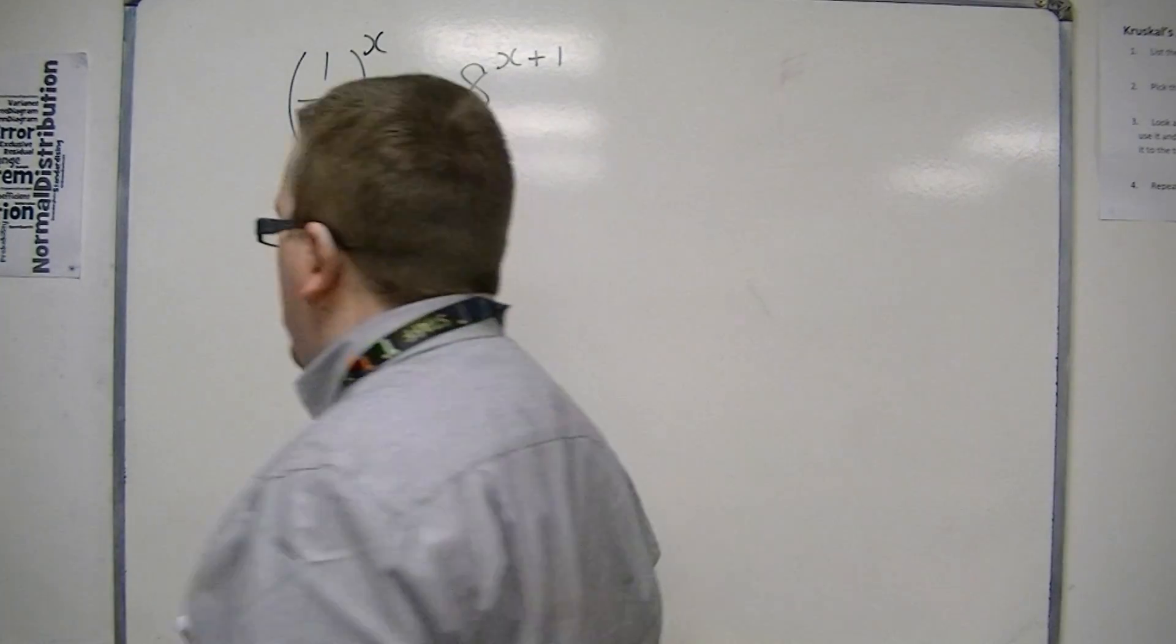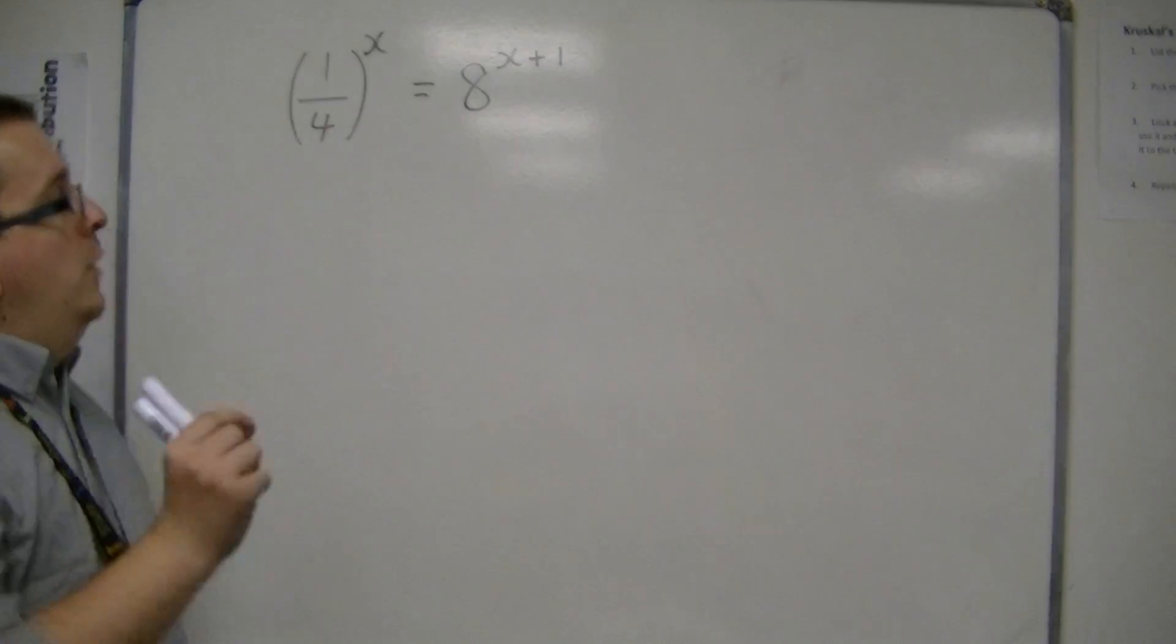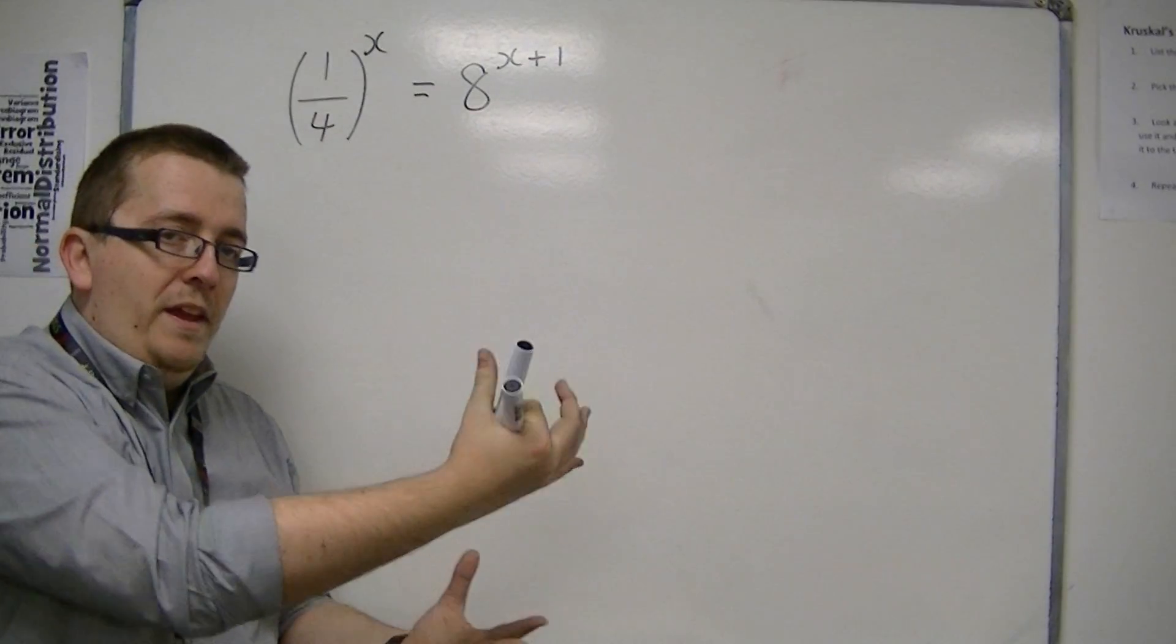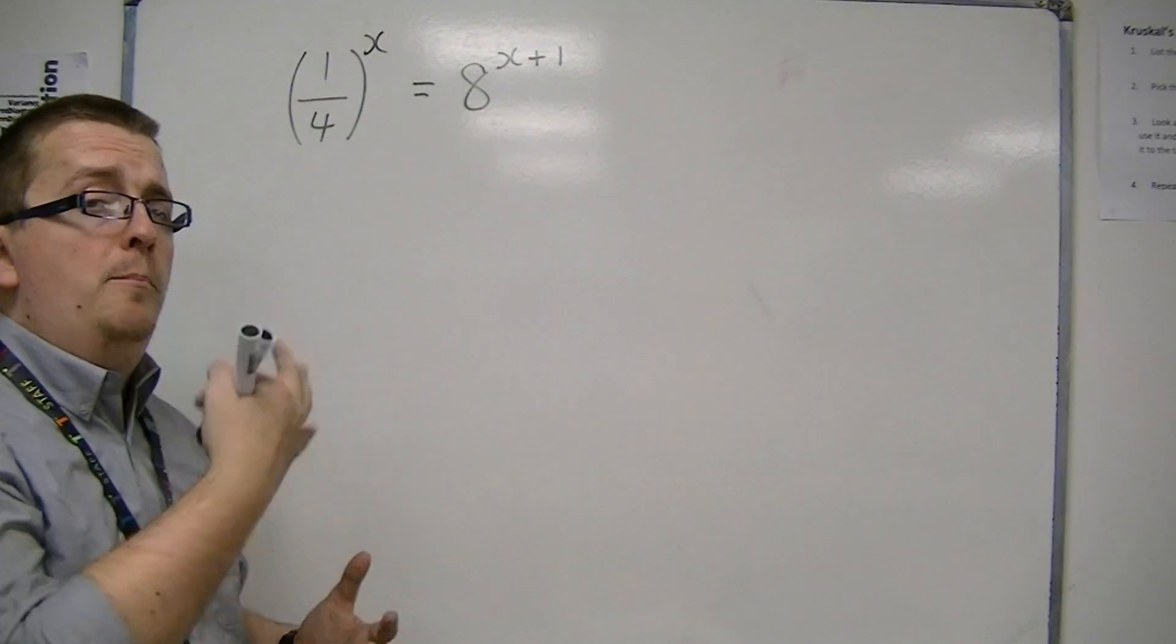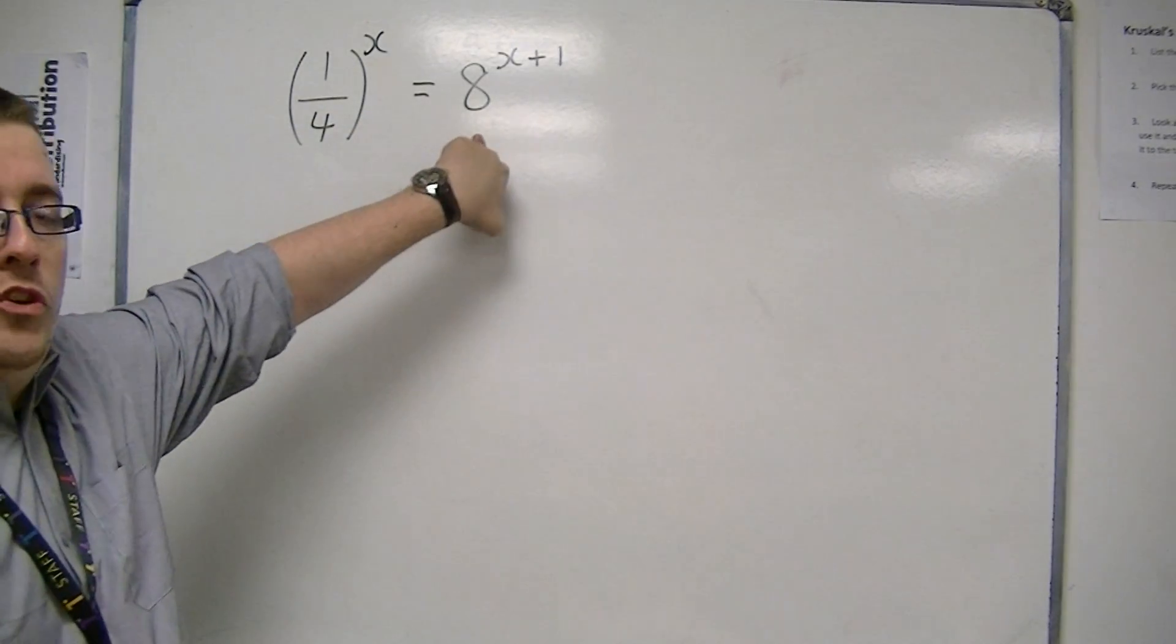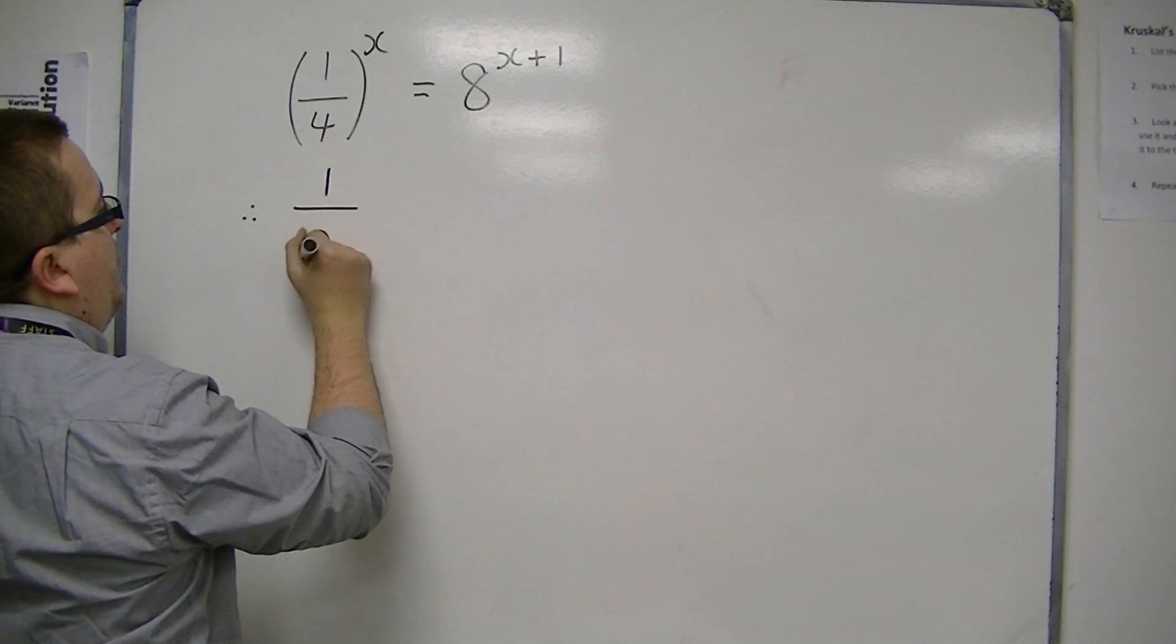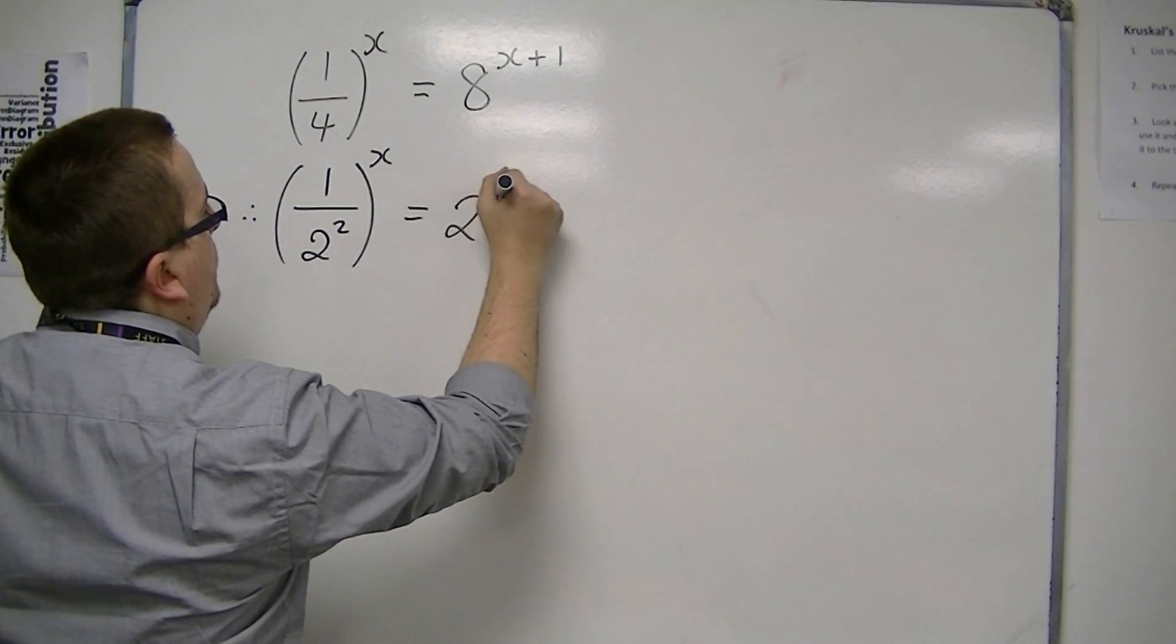So the first thing that I might want to do here is a case of replacing all of the numbers with a number to the something, if you see what I mean. So I know that, for example, 4 and 8 are both powers of 2. 4 is 2 squared and 8 is 2 cubed. So that would probably be my first step. So I'm going to replace the 4 with 2 squared and replace the 8 with 2 to the 3.